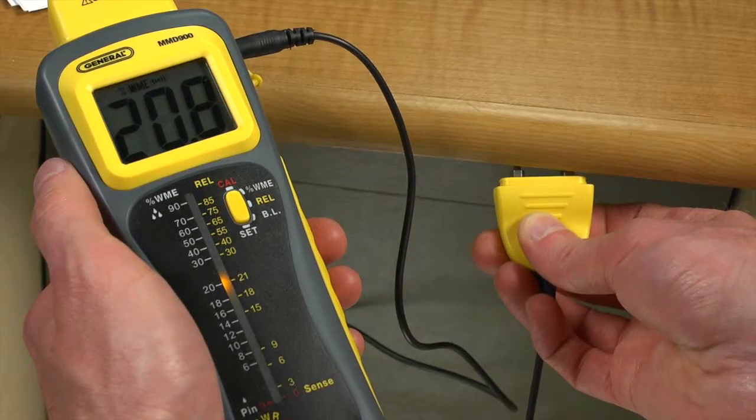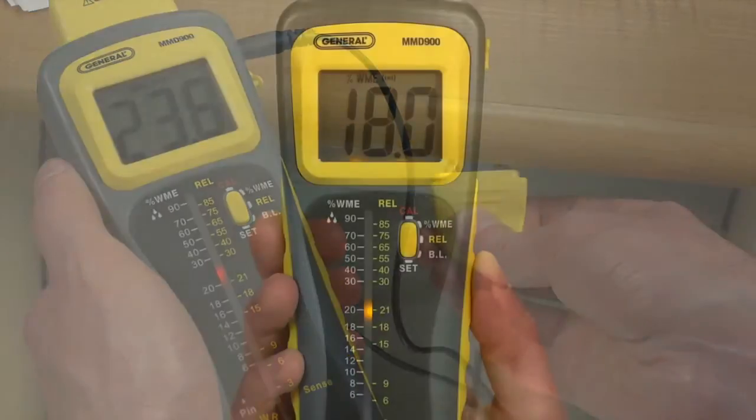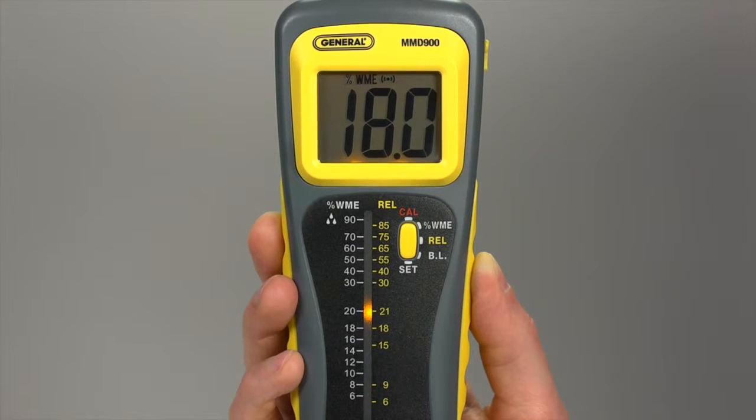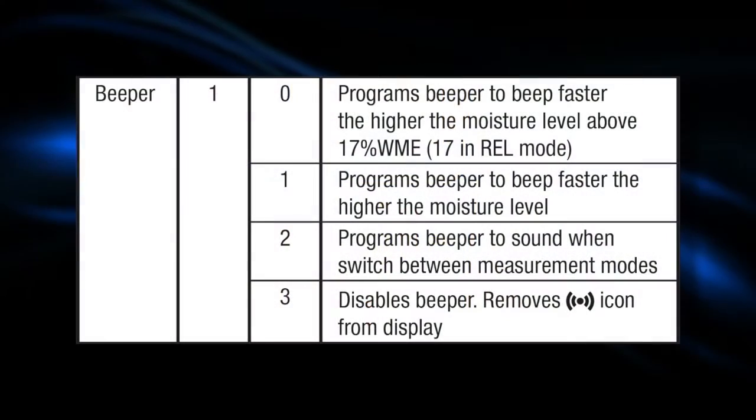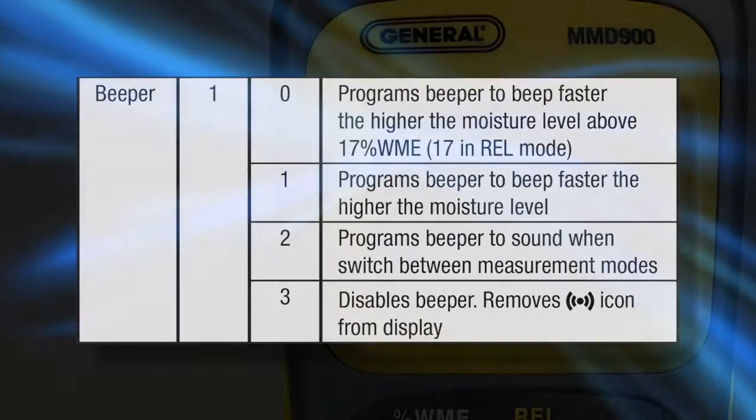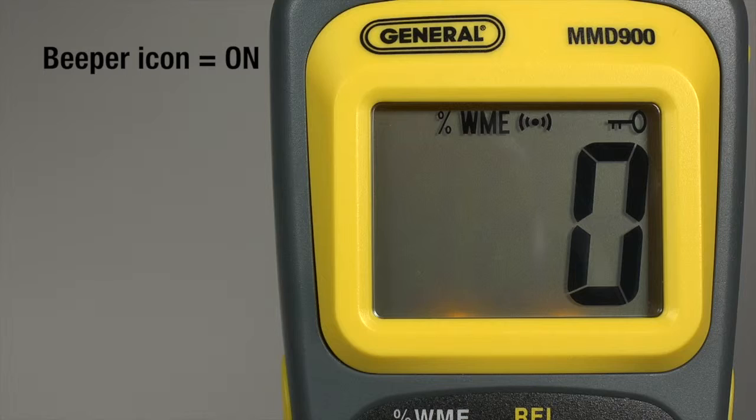You can also use the pins on the cable to get into less accessible areas. The beeper sounds if WME is over 17%. The wetter the material, the faster the beep. You can program the beeper to other settings or turn it off. This icon indicates the beeper is on.